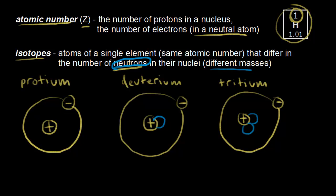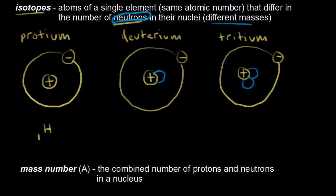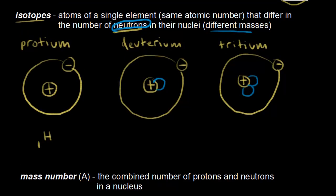To distinguish between the different isotopes, we write symbols. The symbol includes the element symbol — hydrogen, H — with the atomic number as a subscript and the mass number as a superscript. The mass number, symbolized by A, is the combined number of protons and neutrons in a nucleus. So A equals Z plus N, where Z is the atomic number and N is the number of neutrons.